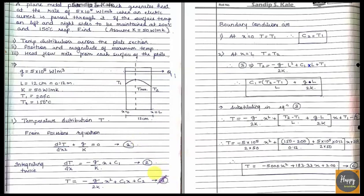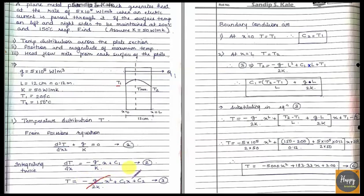After writing the Poisson's equation and integrating, we apply the boundary conditions to find C1 and C2. At x = 0, the temperature is T1. Substituting x = 0 into equation 3, the x² and x terms go to zero, so C2 = T1. This is our first constant.